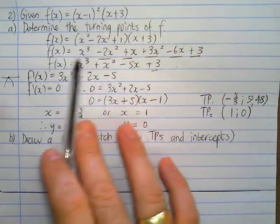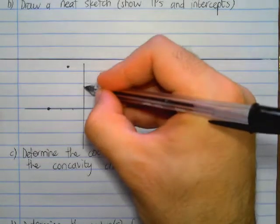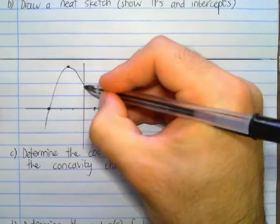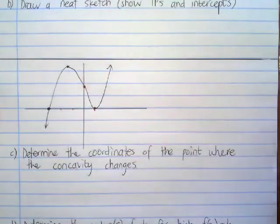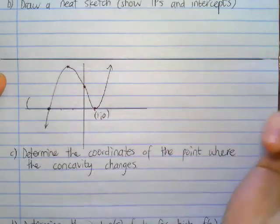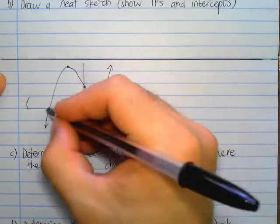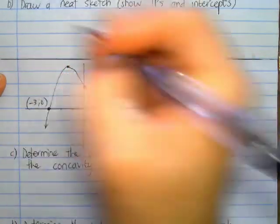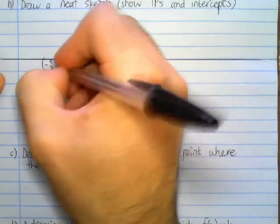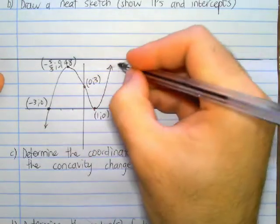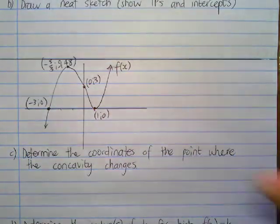So 3 is going to be our y-intercept, which let's say is over there. Now we're ready to go up and up and up. We're going to turn over there. We're going to cut at 3. We're going to go there, turn over there, and go back up. Similar shape to our previous exercise. We should just label it because our graph paper was pretty roughly drawn. So there's our 1 turning point. There is another x-intercept, which was (-3,0). There is a turning point, which was -5/3 and 9.48. And there was a y-intercept, which was (0,3). And then we could just write f(x).